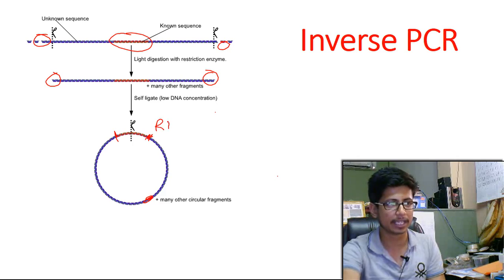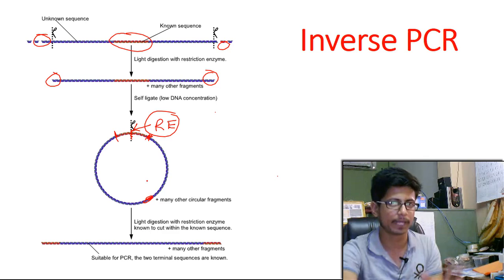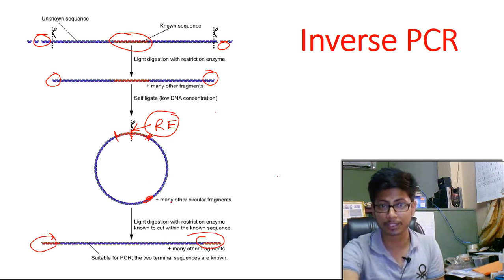So use that restriction enzyme and upon treatment of the restriction enzyme it cleaves from this known target region and as it cleaves both the strands are cleaved and this DNA becomes linear again. But in this case the linear DNA have a different type of feature. Now the regions at the terminal part are known to us and the unknown region comes to the middle.